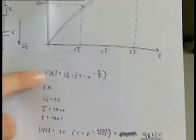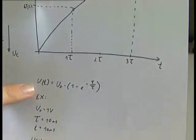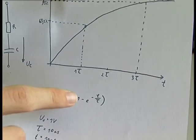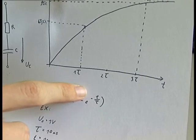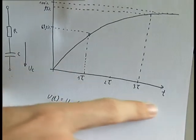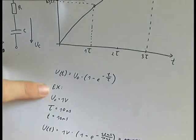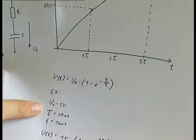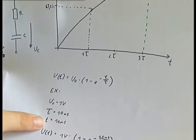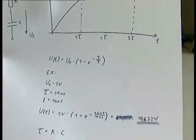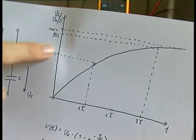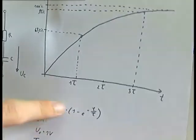Looking at this formula here — this formula is for this diagram. We can say that voltage over time equals the supply voltage multiplied by 1 minus e (e is a natural constant), raised by minus T divided by tau. With this equation you can calculate every point in your diagram. For example, if my supply voltage is 1 volt and my tau time constant is 10 milliseconds and I want to know the voltage at 10 milliseconds, then I fill in and get 0.632 volts — which is also this 63.2% point.